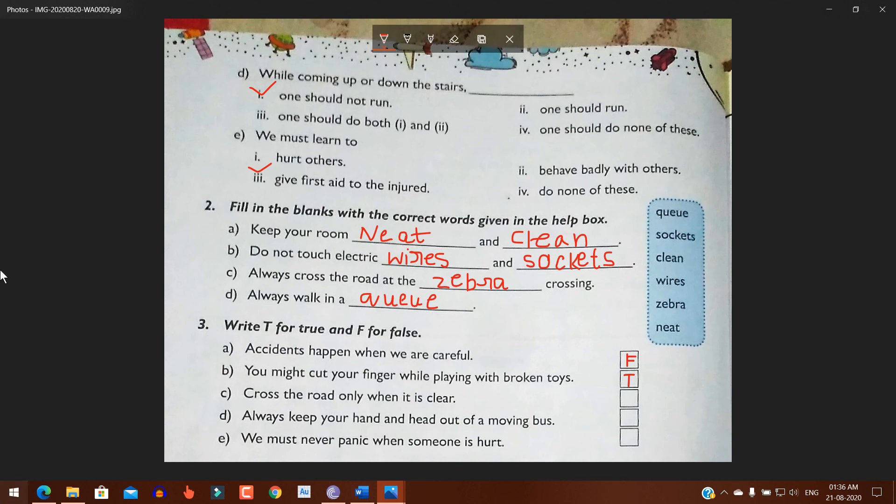Number C: Cross the road only when it is clear. True. Number D: Always keep your hand and head out of a moving bus. False.